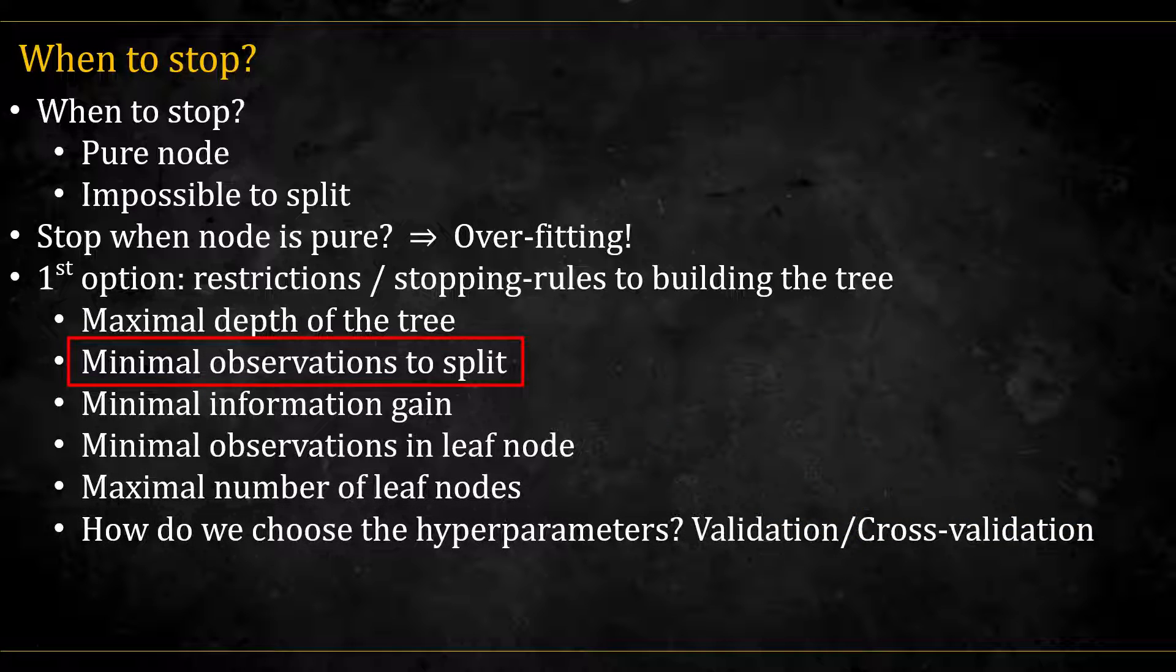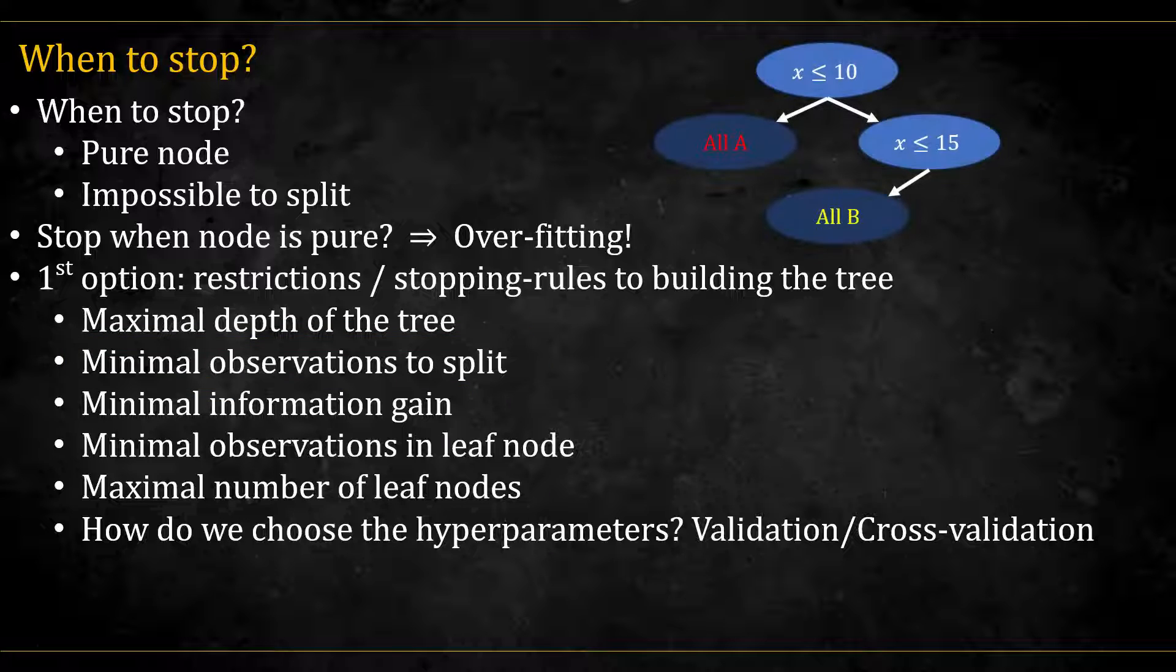We can also restrict by setting a minimal number of observations required to split. In this example, we set the minimal number to be 10. The green node is not pure, but since it has less than 10 observations, we cannot split it any further, and it ends up being a leaf node. Other possibilities are restricting the minimal information gain, that is, if the information gain of the best split is not substantial enough, we won't split and the node will be a leaf node, setting a minimal number of observation in a leaf node, and setting a maximal number of leaf nodes. This last restriction is a bit more tricky to implement as it requires us to keep track of the state of the entire tree and choose carefully where the next split is going to be.